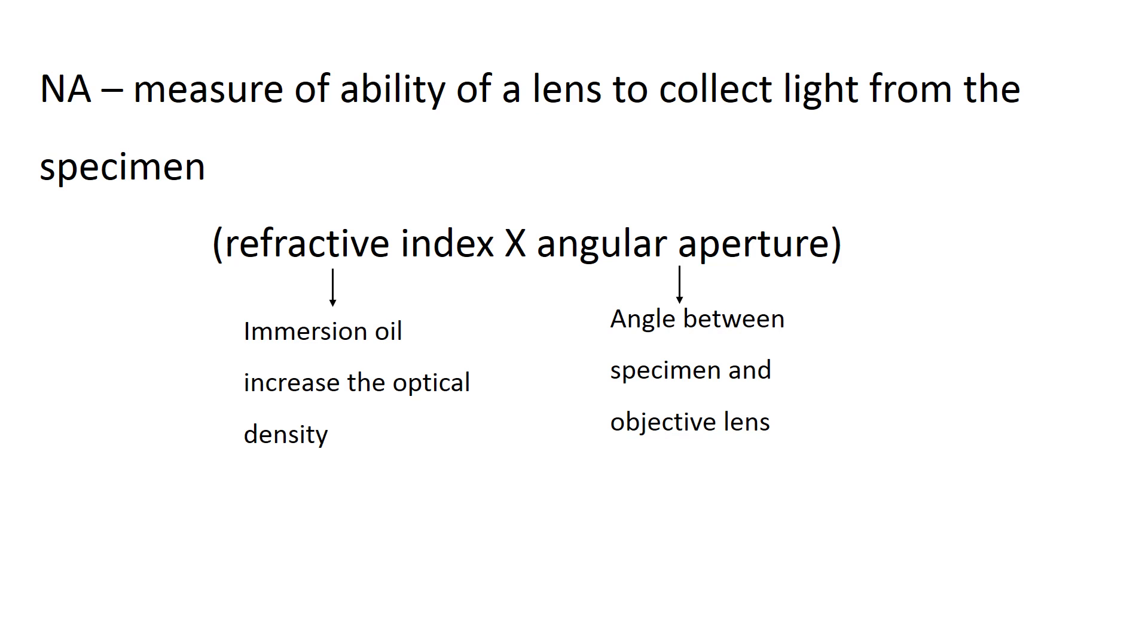Numerical aperture is the measure of ability of a lens to collect light from the specimen. It is the product of refractive index and angular aperture. Refractive index is directly related to optical density. Immersion of specimen in oil increases the optical density, which leads to an increase in resolving power.